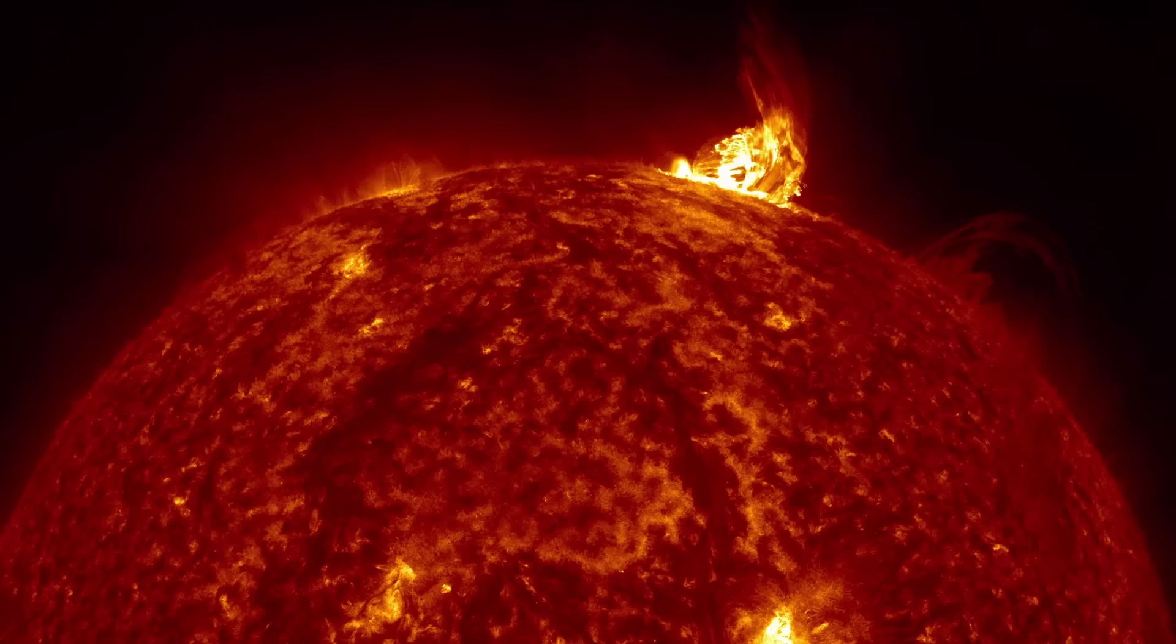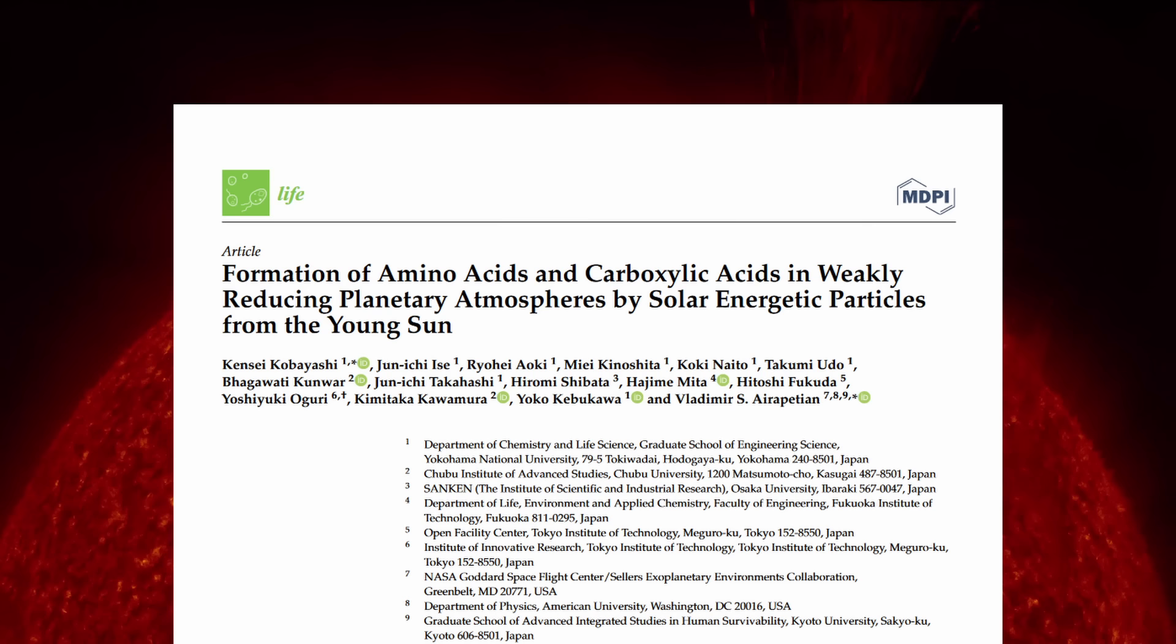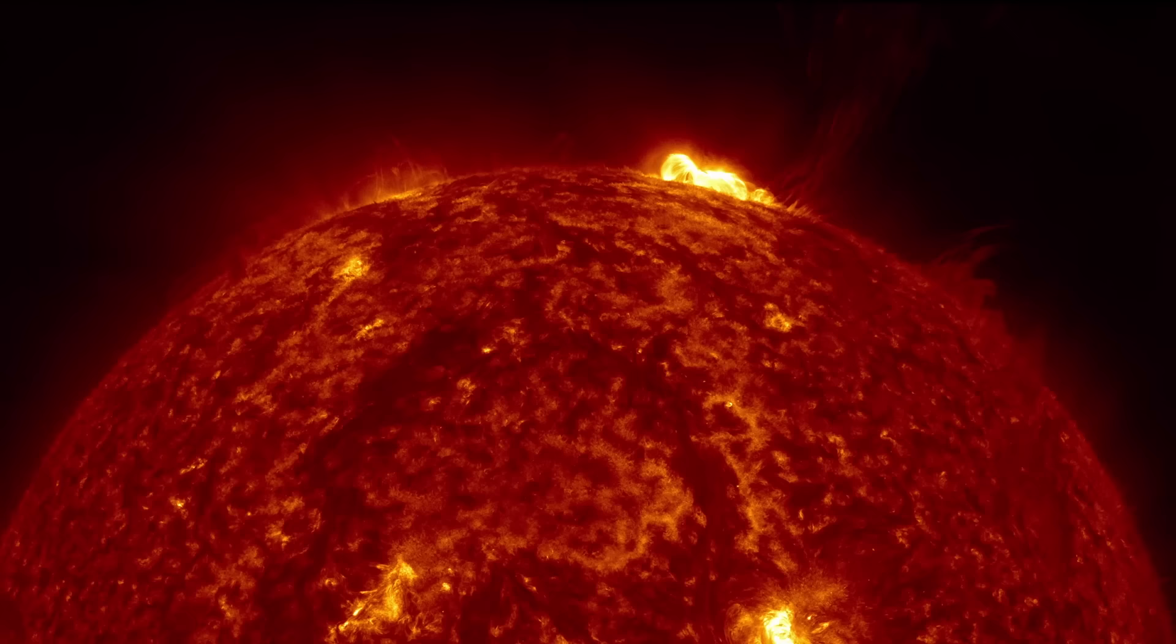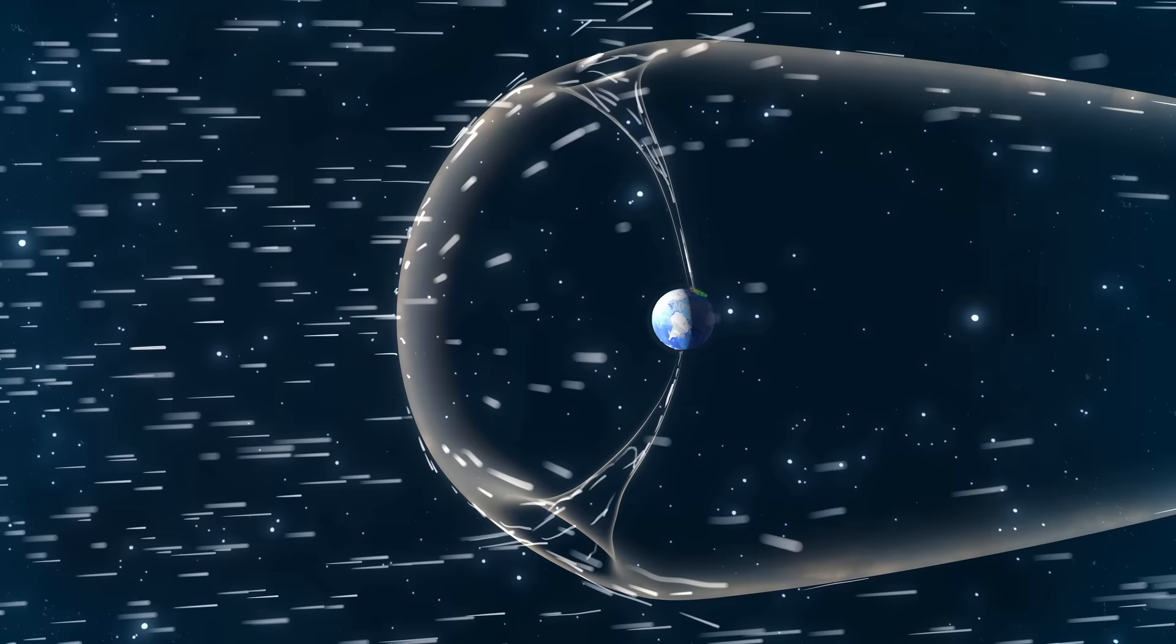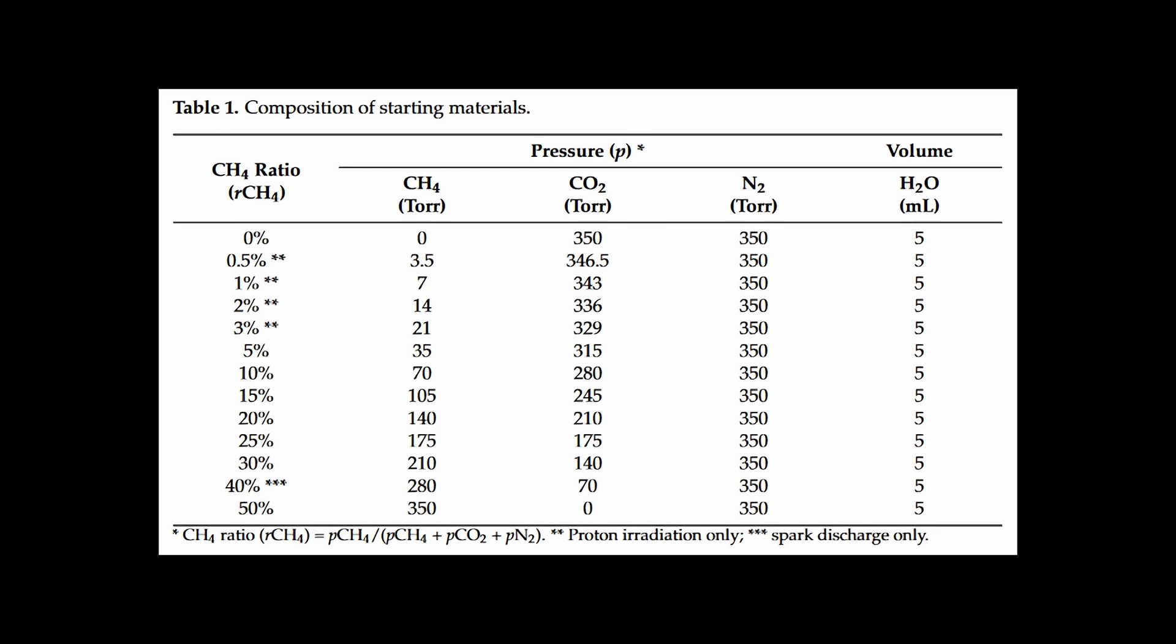So they started to look at an alternative energy source that could have kick-started life. They suggested that in the past the sun was dimmer but would have had more powerful solar super flares. These launch high energy particles which interact with the Earth's ionosphere and the magnetic field can funnel them towards the poles. The main constituents of the solar wind are protons. They questioned if these flares could be the trigger required to form the building blocks of life. They created a mixture of gases that matched early Earth's atmosphere and bombarded it with protons and compared it to one where they used an electric discharge to simulate lightning.